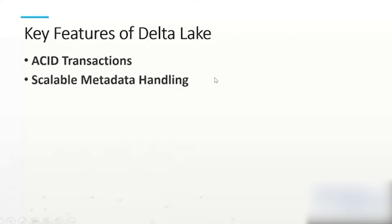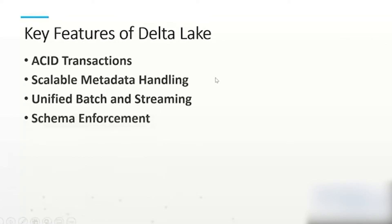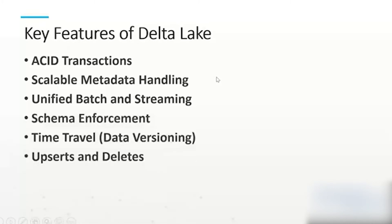Let me go over what ACID transactions are. ACID essentially stands for Atomicity, Consistency, Isolation, and Durability. Atomicity refers to an all-or-nothing situation where we either write data to a table or we don't — if there's an error, the data doesn't get written. If we decide to roll back the transaction, nothing gets written to the table. Consistency guarantees committed transactions, meaning the data is consistent — there are no partial writes or partial transformations. We know the data is definitely consistent and reliable. Isolation means the transactions occurring are essentially isolated and independent. And Durability means that the data is never lost — any committed data that gets written is never lost.